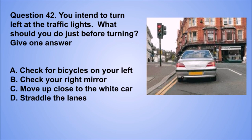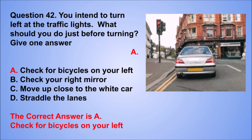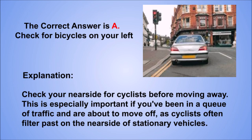Question 42. You intend to turn left at the traffic lights. What should you do just before turning? Give one answer. A. Check for bicycles on your left. B. Check your right mirror. C. Move up close to the white car. D. Straddle the lanes. The correct answer is A, check for bicycles on your left. Check your near side for cyclists before moving away. This is especially important if you've been in a queue of traffic and are about to move off, as cyclists often filter past on the near side of stationary vehicles.